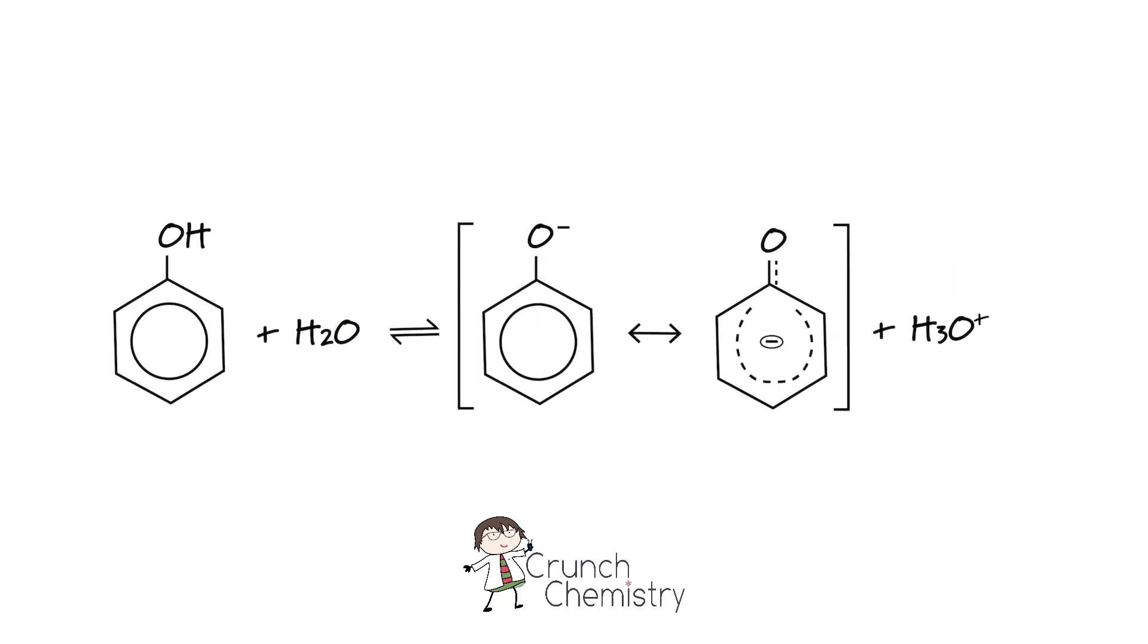When phenols are behaving as acids they also lose the proton from the OH group to form the phenoxide ion or conjugate base. And once again phenols are able to stabilize the negative charge on the oxygen by delocalizing it into the ring of delocalized electrons.